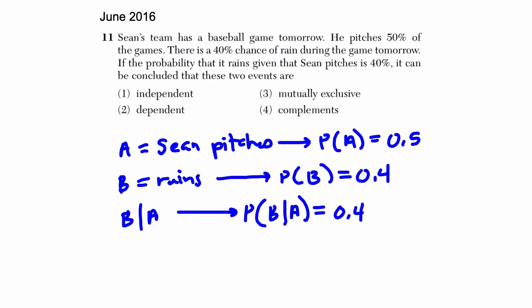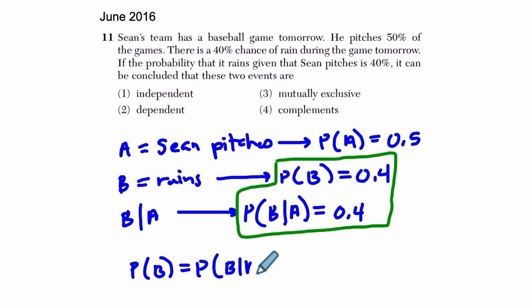And you might notice, oh look at that, these two probabilities are equal. Now the big idea here is that if the probability of B equals the probability of B given A, if these two things are equal, and they are here, then your two events are independent.